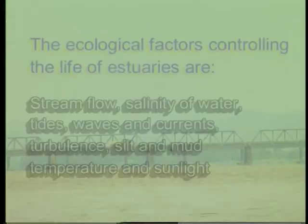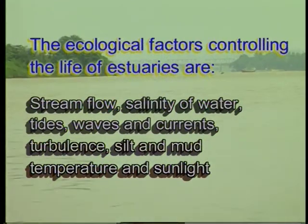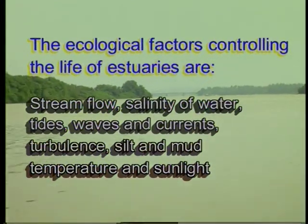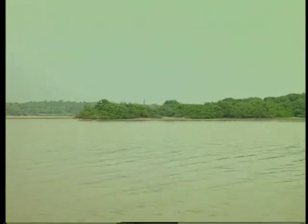The ecological factors controlling the life of estuaries are stream flow, salinity of water, tides, waves and currents, turbulence, silt and mud, temperature and sunlight. Stream flow is an important factor. Estuarine conditions result from the interaction of one-dimensional river flow with the oscillating ocean tides and wind. Season and rainfall determine the amount of stream flow coming towards an estuary.